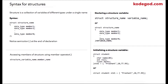The keyword struct is used in C to define a structure. After struct you write your structure name, and then inside curly braces you can have a collection of variables which can have any data type. Notice that a semicolon at the end of the structure definition is compulsory.